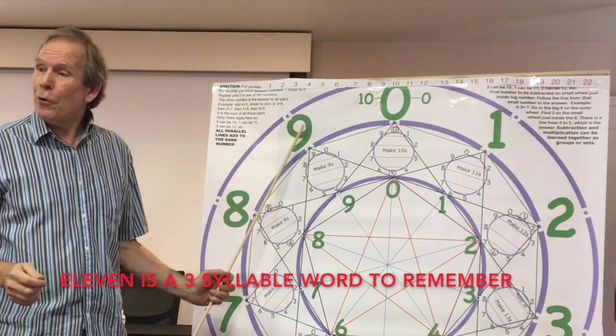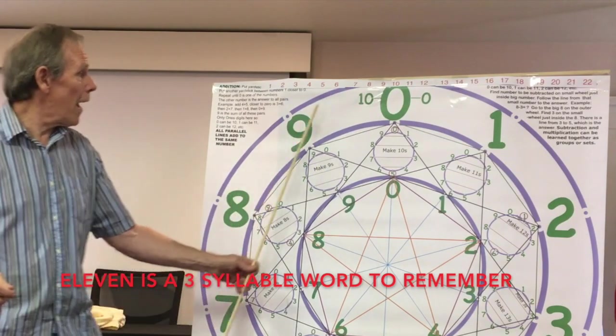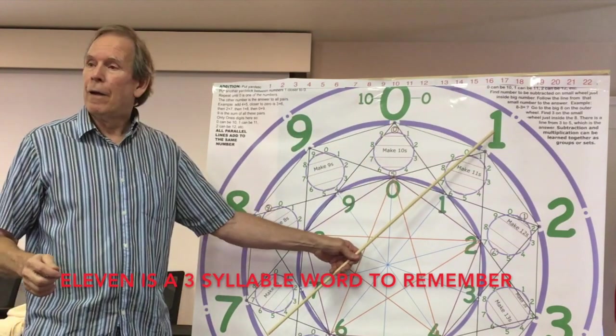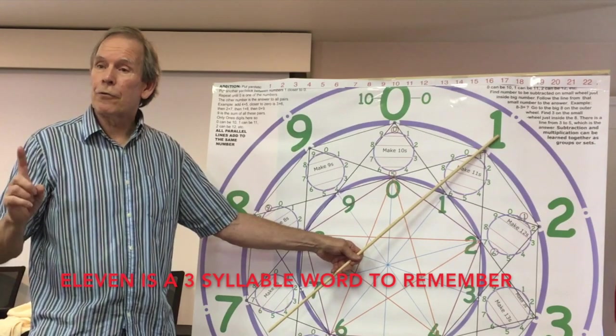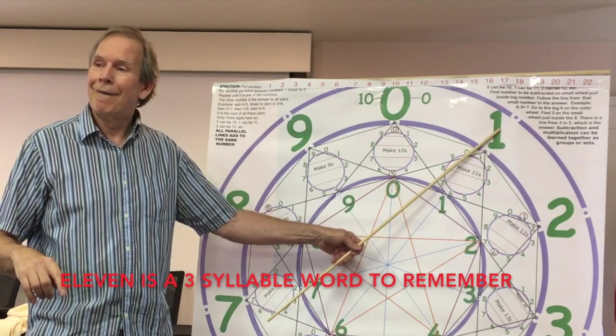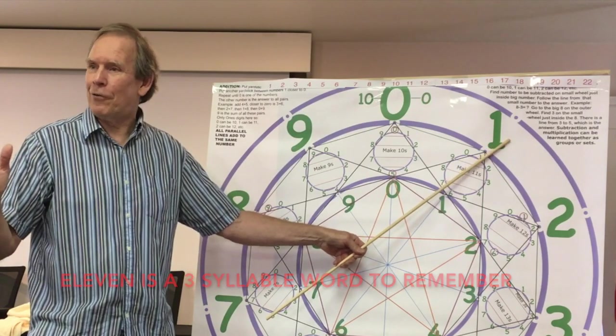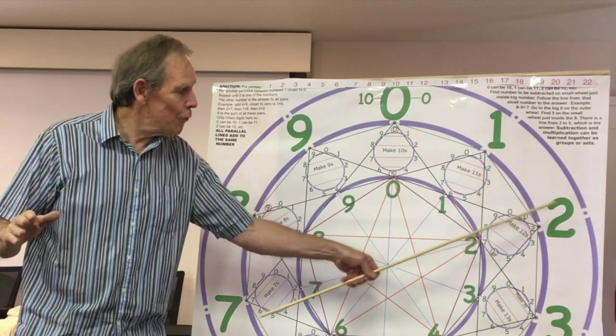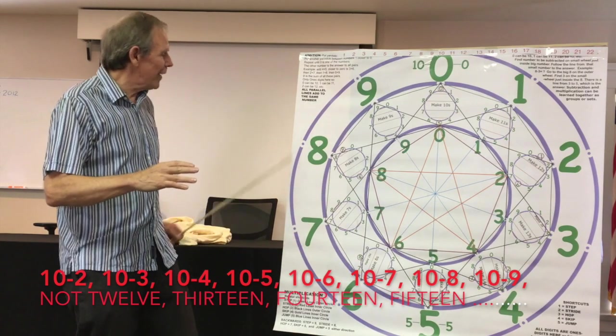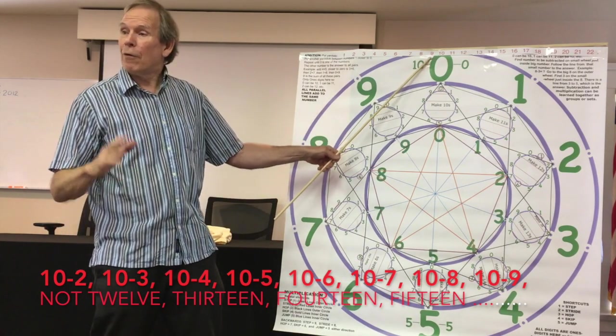So, what we do here is we do 8, 9, 10. We do what the Asians do, literal translation: 10-1, not 11. 10-1, it makes sense, right? 10-2, 10-3, 10-4, 10-5, 10-6, 10-7, 10-8, 10-9, 20, or two 10s.